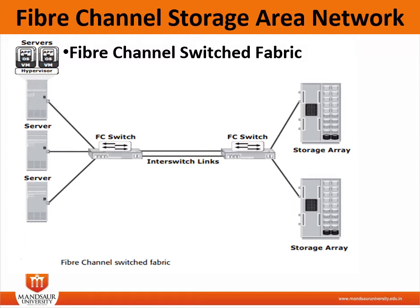In this switch fabric, the link between any two switches is called an Inter-Switch Link (ISL). This ISL enables switches to be connected together to form a single-layer fabric. Inter-Switch Links are used to transfer host-to-storage data and fabric management traffic from one switch to another. By using Inter-Switch Links, a switch fabric can be expanded to connect a large number of nodes.